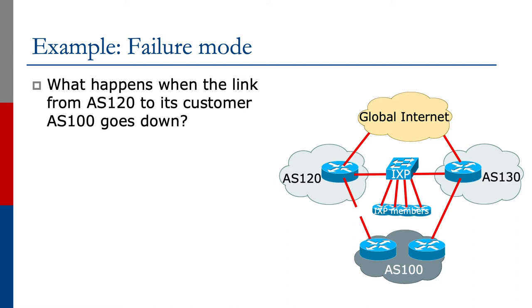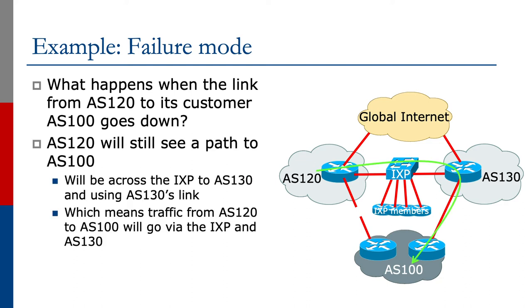What about if we now look at a failure mode? What happens if the link from AS120 to AS100 breaks? It could be shut down, it could be a physical failure, or there could be some issue with the border router in AS100. The diagram shows the link being broken. AS120 will still see a path to AS100, but this path will now be across the Exchange Point to AS130 and then using AS130's link to the customer, AS100.